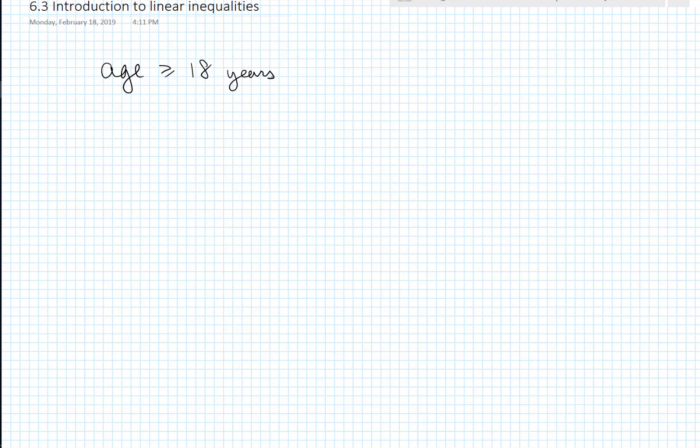All of you have probably been to a playground or an amusement park and seen roller coasters that have height restrictions. So, we can express that with an inequality. We can say height must be greater than or equal to some height, let's say 120 centimeters, in order to safely ride the roller coaster.